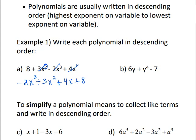For the second example, the term with the largest exponent goes first, which is y to the fourth. What goes next is plus 6y. And the last thing would be the constant, which is negative 7.